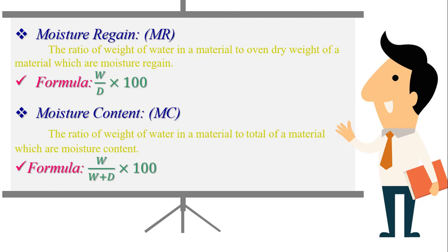W plus D means water weight plus oven dry weight. The weight of water plus the oven dry weight equals the total material weight. The total material weight multiplied by 100 gives the moisture content percentage.